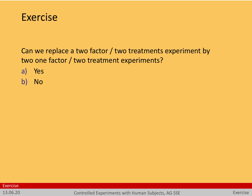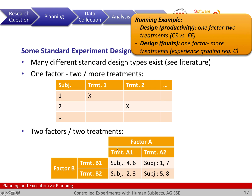The answer is no. As seen on the previous slide, if I have a two-factor, two-treatment experiment, I actually need to analyze all four different combinations. If I have two independent experiments where I evaluate the different treatments, I do not necessarily get the different combinations of the treatments. So that's not equivalent.